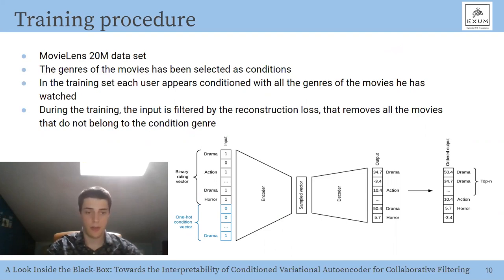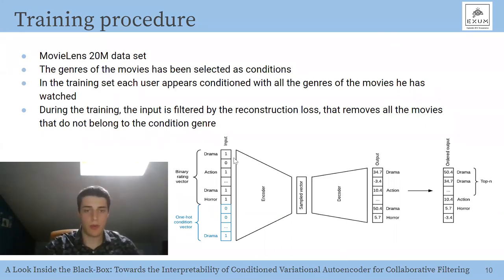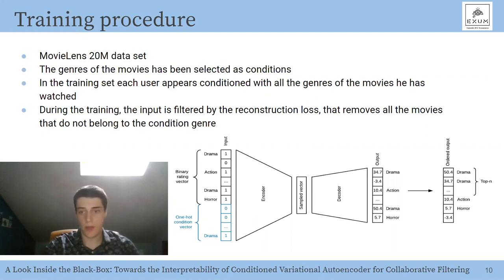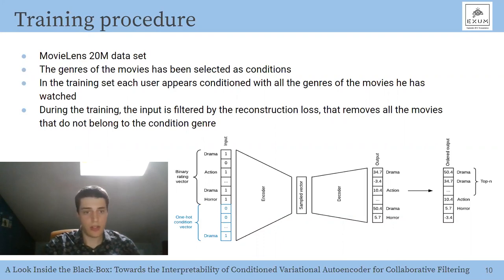Here is an example of training the conditional variational autoencoder on the MovieLens 20 Million dataset. A user has watched four movies with Drama, Action, Drama, and Horror as genres, and has expressed a condition for the Drama genre — meaning they want to see a drama movie. In the output, drama movies receive the best scores, and when the output is ranked, only drama movies appear in the top positions. This is the desired result, showing the reconstruction loss has done its job.